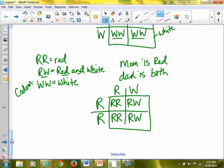The genotypes are R, R, R, W. Those are the possible genotypes. The possible phenotypes are 50% chance of being red and 50% chance of being both red and white.